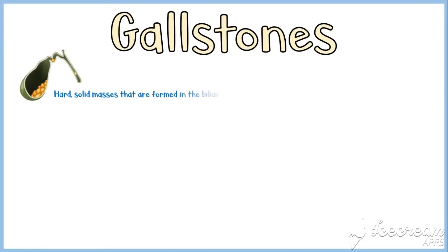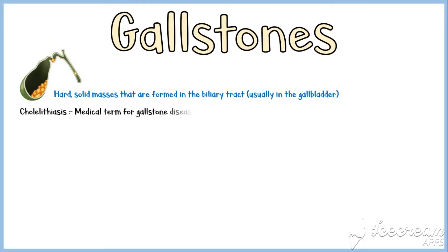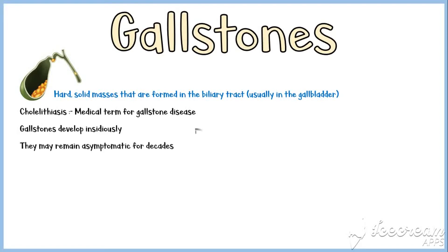Gallstones are hard, solid masses that are formed in the biliary tract, usually in the gallbladder. Cholelithiasis is the medical term used for gallstone disease. Gallstones usually develop insidiously, and they may remain asymptomatic for decades.